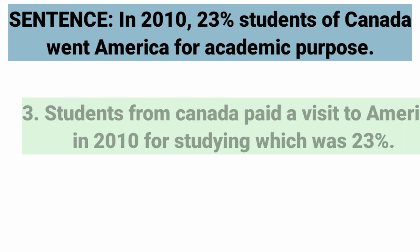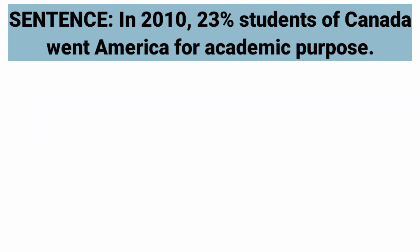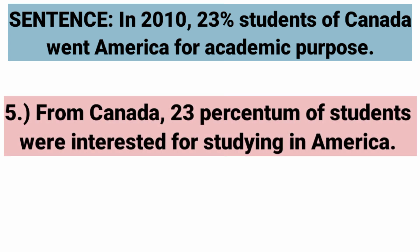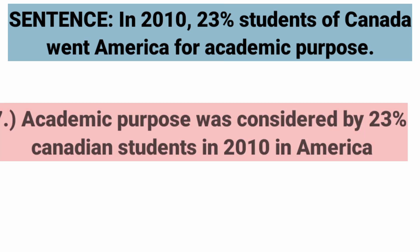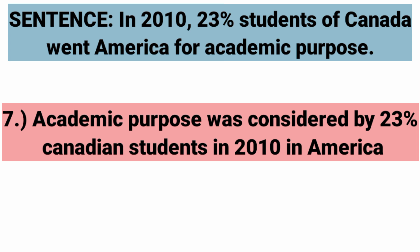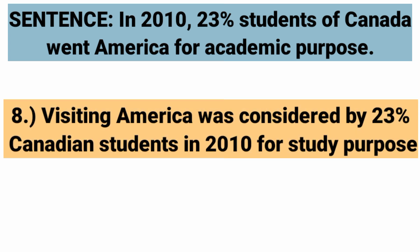Fourth: 'Canadian learners preferred going to America for the study purpose in 2010. The relative figure was 23%.' Fifth: 'From Canada, 23% of students were interested in studying in America.' You can write America or US — remember that 'the' is always written before US. Sixth: 'America was visited by 23% Canadian students in 2010.' Seventh: 'Academic purpose was considered by 23% Canadian students in 2010 in America.' Eighth: 'Visiting America was considered by 23% Canadian students in 2010 for the academic purpose' — or you can write 'for the study purpose.' Both are the same.